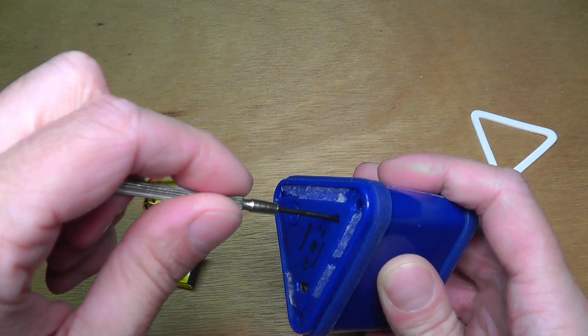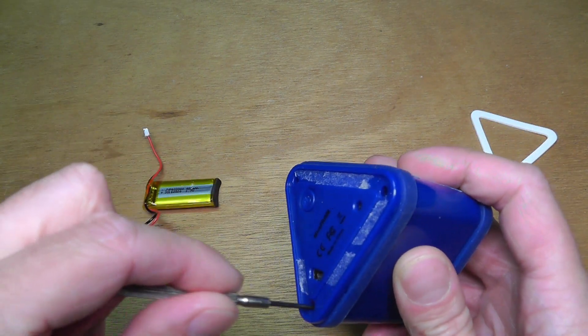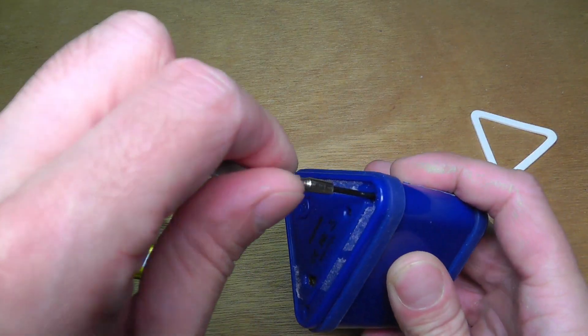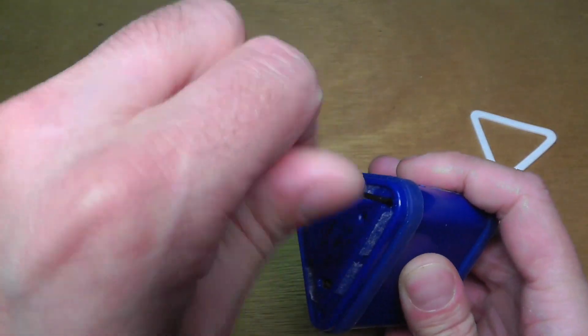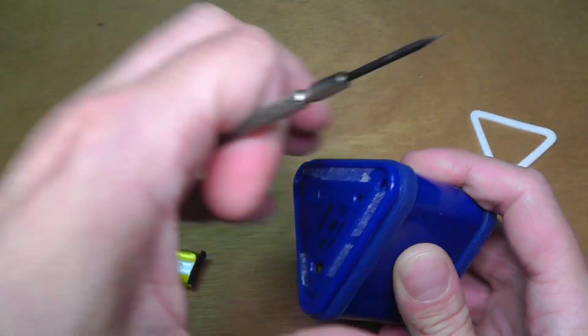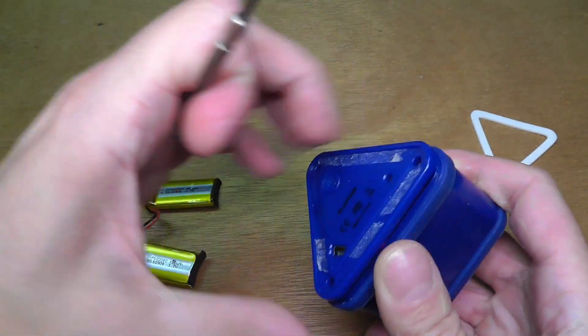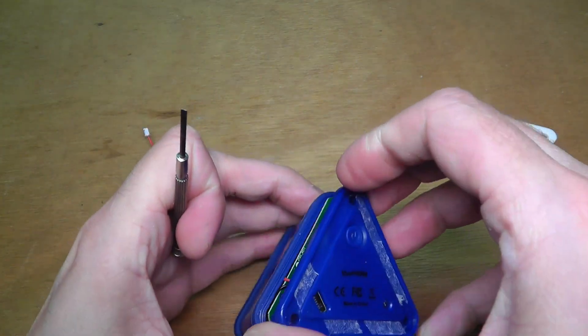So I start out by opening up the speaker. There's just a couple of screws here. It works a little bit different with any other model, but you should be able to do the same thing with other Bluetooth speaker models. So let me open this up here and get access to the battery that's in there.